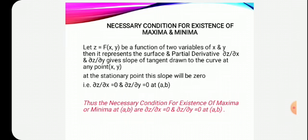Del z by del x and del z by del y represent the slope, which means the rate of change. At the point where the rate of change is 0, that will be the stationary point. At stationary points you will get maximum or minimum. Stationary points can be more than one. From those stationary points, we need to calculate which particular point gives a maximum and which gives a minimum.